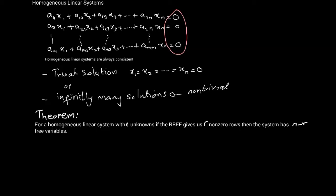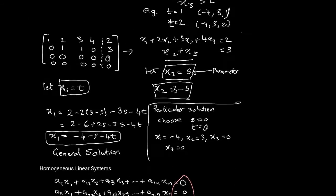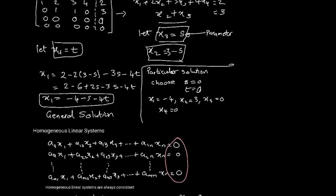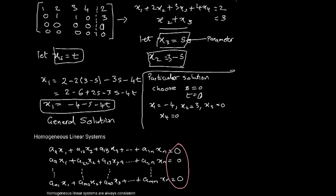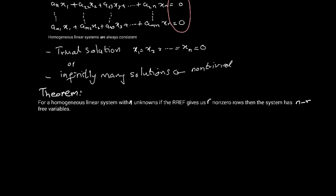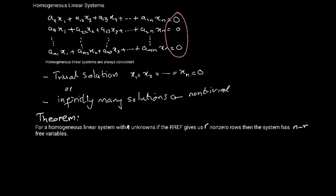Free variables are the ones that can be set as parameters. In the previous example, let me pull that down here for you again. In this example, you saw we had x3 and x4, two variables, we had two free variables so they could be set to parameters. The free variables are basically those variables that are set as parameters.